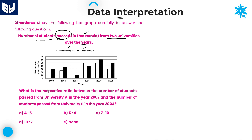University A and University B over the years from 2003 to 2008 — six years total: 2003, 4, 5, 6, 7 and 8. Each year shows how many students passed from University A and University B. The white color belongs to University A, the black color belongs to University B, and every value is given in terms of thousands.